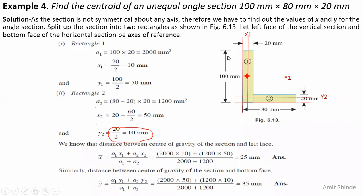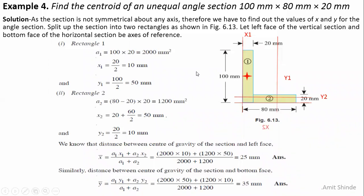So x2 = 50 millimeters and y2 = 10 millimeters. The centroid of rectangle two is located at 50 millimeters from the left face and 10 millimeters from the bottom. Now that we have all areas and coordinates — A1 = 2,000 at (x1=10, y1=50) and A2 = 1,200 at (x2=50, y2=10) — we apply the formulas for x̄ and ȳ.